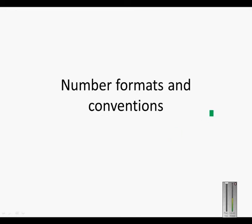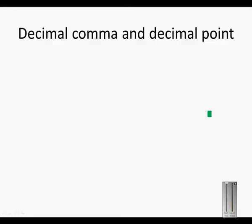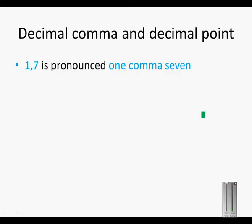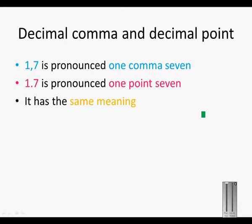Number formats and conventions. The decimal comma and decimal point: this is 1,7 and this is 1.7. They have the same meaning.